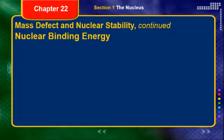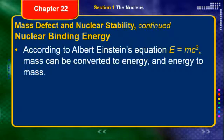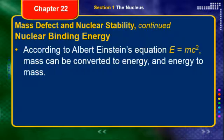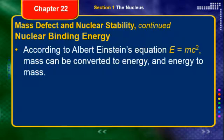We're going to transition to nuclear binding energy, but first we've got to talk about Albert Einstein and his famous equation E equals MC squared. According to this equation, mass can be converted into energy and energy into mass — it claims an equivalency between the two. One thing I want to point out when it comes to doing calculations with this equation: C is equal to the speed of light, which is a constant. So realistically, there are only two terms that can change: energy and mass.